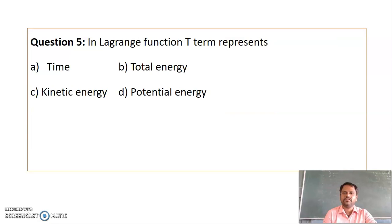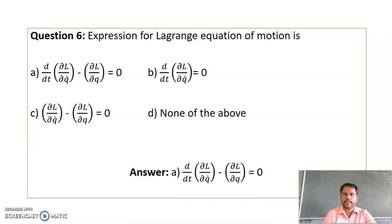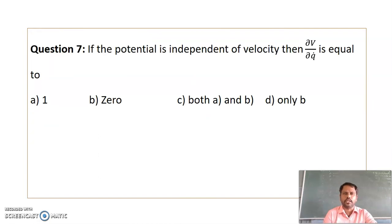Question 5: In the Lagrangian function, T represents kinetic energy and V represents potential energy, so the answer is option C. Question 6: The expression for the Lagrangian equation of motion is d/dt of (∂L/∂Q dot) minus ∂L/∂Q equals 0. This holds for conservative forces; for non-conservative forces, the zero on the right-hand side is replaced by capital Q_J, so the answer is option A. Question 7: If the potential is independent of velocity, then the differentiation of potential with respect to velocity is 0, so the answer is option D.